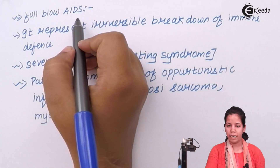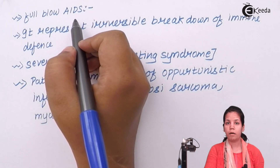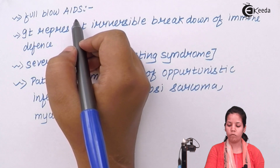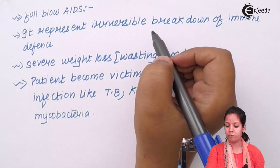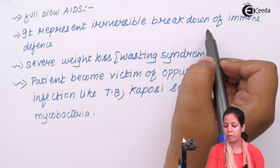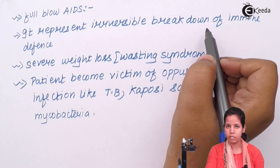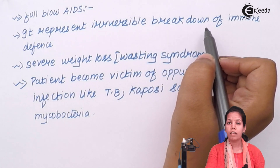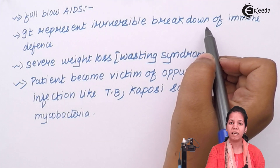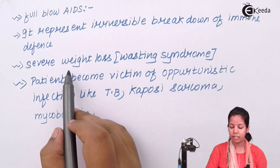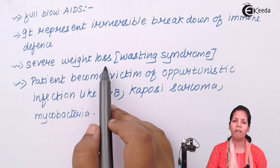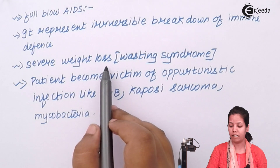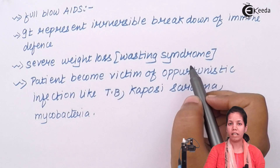A full blown AIDS patient — once the asymptomatic carrier stage is over — represents an irreversible breakdown of the immune system. Once that happens, the patient will have HIV in its maximum and fastest form. There could be severe weight loss — a reduction of half the person's current body weight — which is termed Wasting Syndrome.